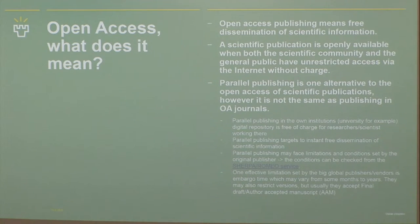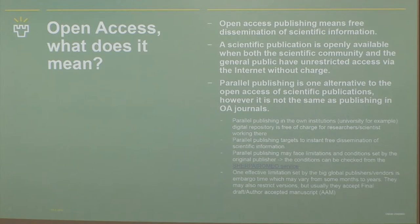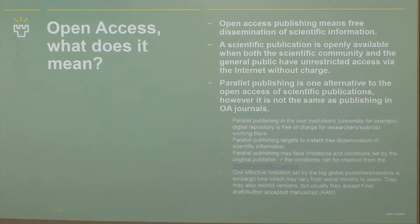One alternative is parallel publishing, but it's not the same as publishing in Open Access journals. In parallel publishing, the institution — for example, universities — can have a digital repository, free of charge naturally for researchers and scientists working there. It also targets instant dissemination of scientific information. Here in Oulu, we are developing our repository to be a digital repository for scientific articles.